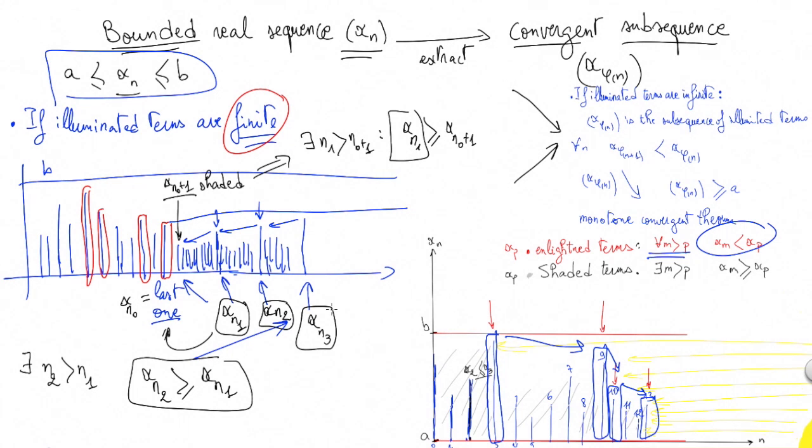And this is how recursively we construct a sequence that is increasing bounded by b, thus also a convergent subsequence. This is how we prove the Bolzano-Weierstrass theorem using the sun illuminating the terms.